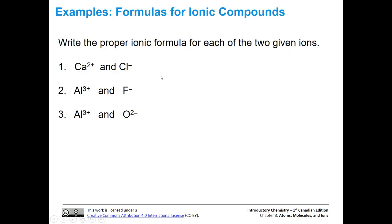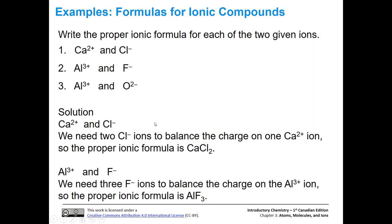Here's a little practice — pause the video and write the proper ionic formula for each of these three sets of ions. For calcium cation and chloride anion: we need two chloride anions to balance the charge on the calcium two plus ion. Two plus, minus one, minus one equals zero. So we get calcium chloride with subscript two, because the cation has a two plus charge.